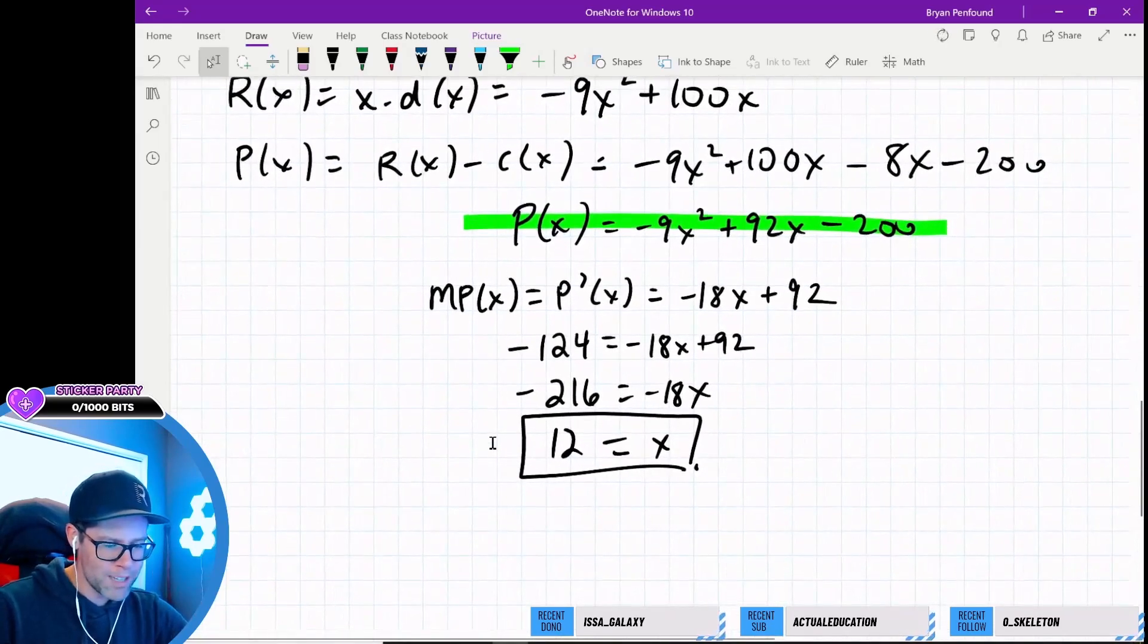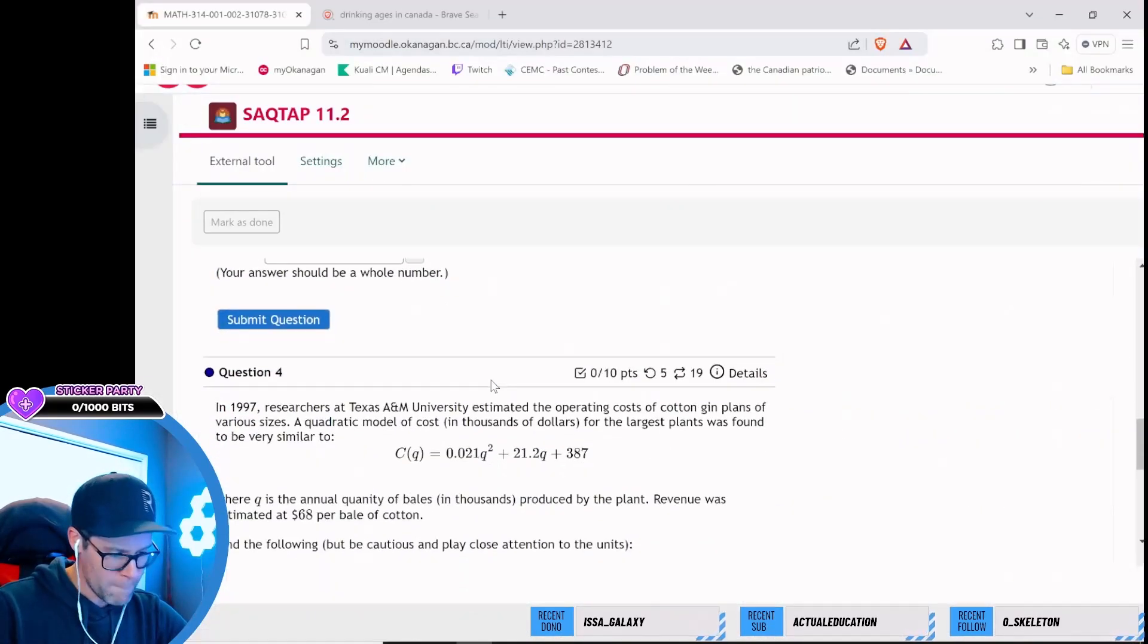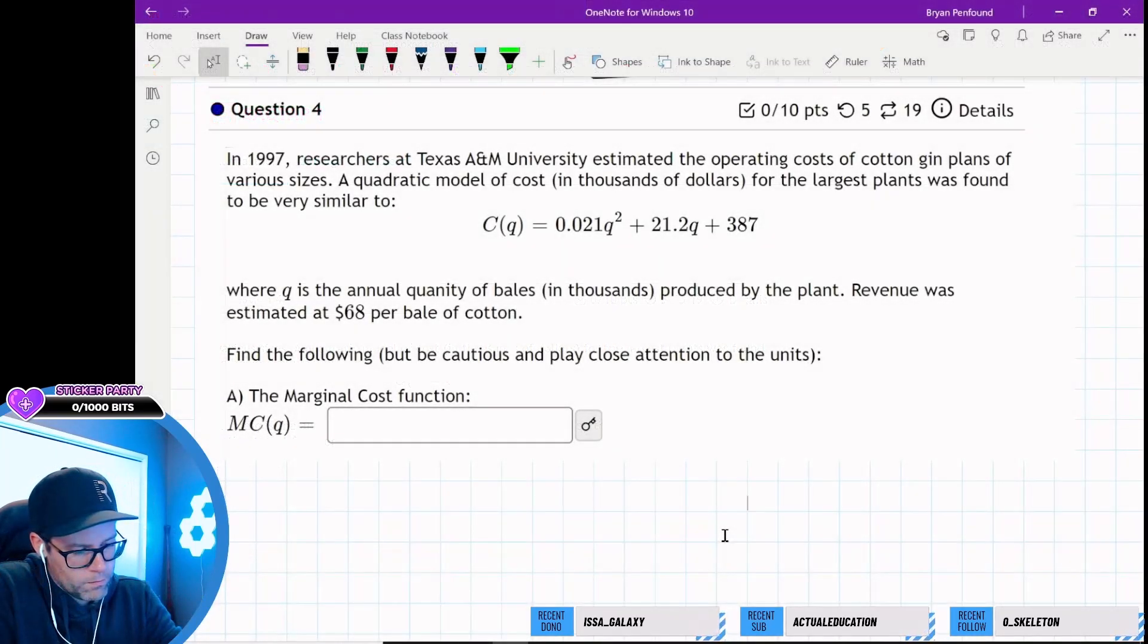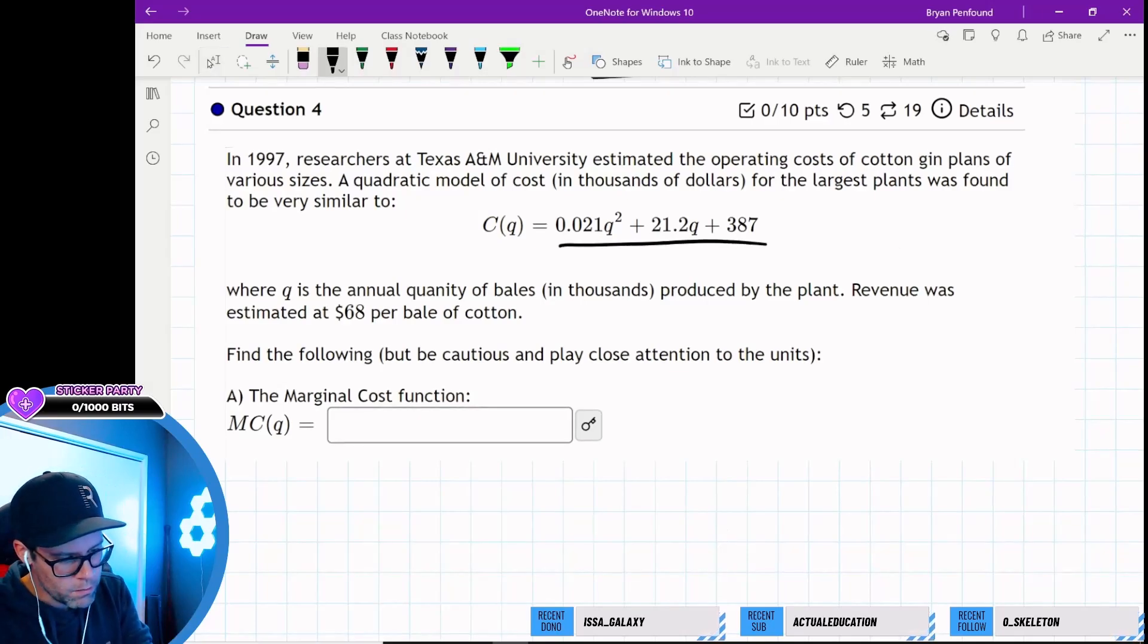Damn, I can still do business applications. That's exciting. Okay, last question. Last question of the night. Maybe for this part, it doesn't matter. But the marginal cost should just be two times, we're just taking the derivative of this. So the marginal cost is 0.042q plus 21.2.